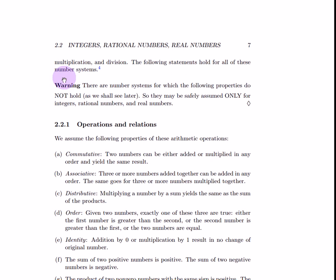Now, pay attention to this warning. The properties that we're going to talk about are only safely assumed for integers, rational numbers, and real numbers. We will find other number systems in which these properties do not hold. This is a common mistake of students to assume that another number system has these properties that you assume for integers, rational numbers, and real numbers.